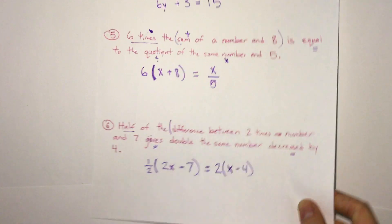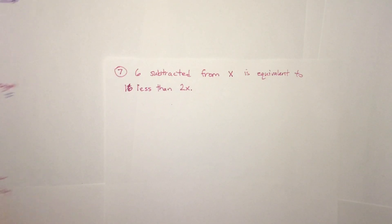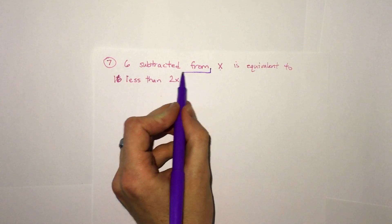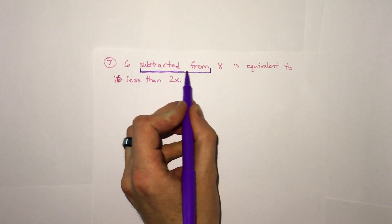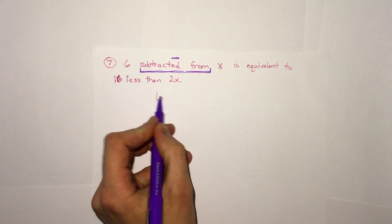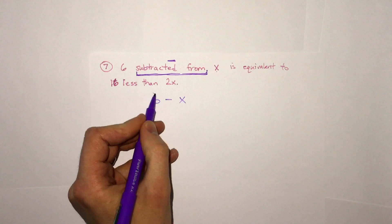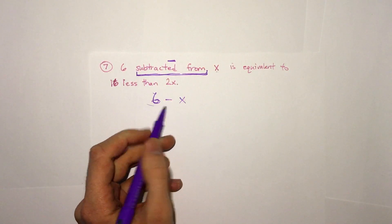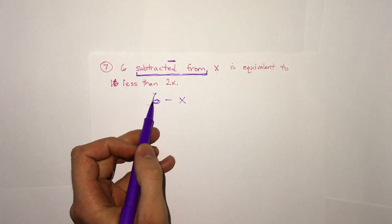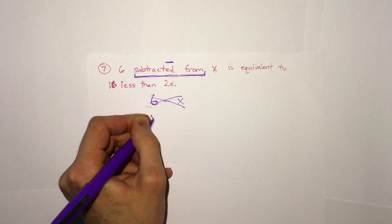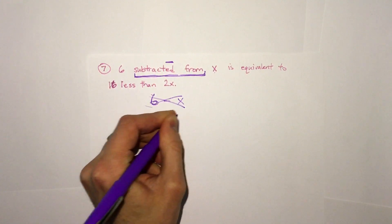The last one we'll look at is if we have six subtracted from x. Now something to be careful here is the word subtracted from. We know that this is minus. And we might think it's six minus x. But it says six is subtracted from x. If we write this, this means x is subtracted from six. We don't want that. Six subtracted from x means x minus six.